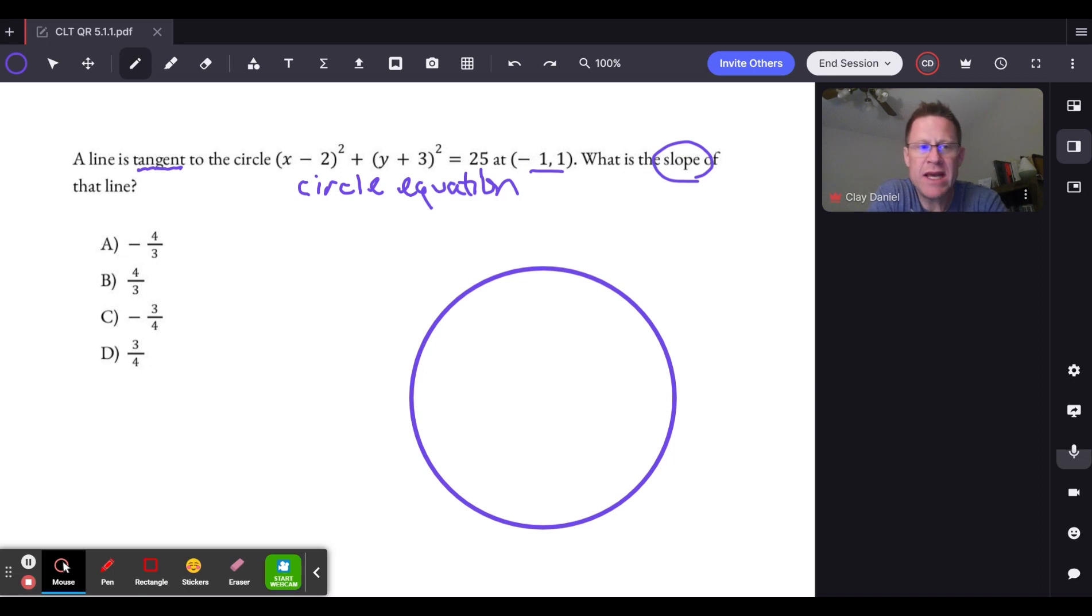So let's start with the word tangent. It's a tricky word in math because it's used in a couple of different ways. This is not tangent in the sense of sine, cosine, and tangent, but rather tangent in the sense of touching at exactly one point.